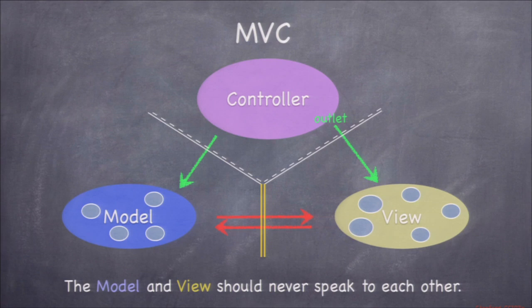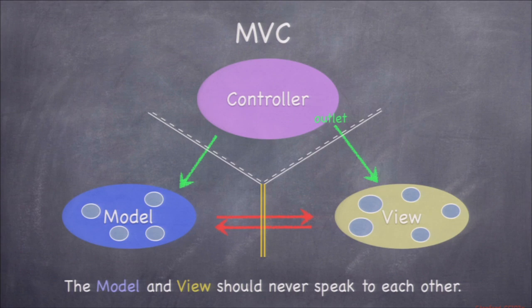Model to view? Never. The model is completely UI-independent, so there's absolutely no way it could talk to a view object. Similarly, since view objects are generic, they can't be talking to any specific model — they need a controller to interpret a model for them. That's why there's a double yellow line between model and view — never cross that line.